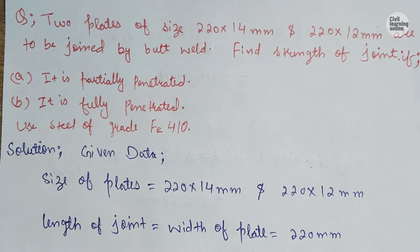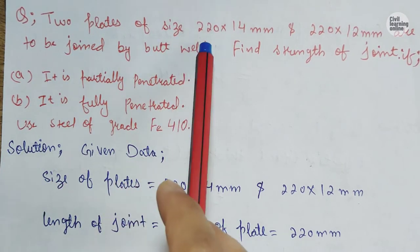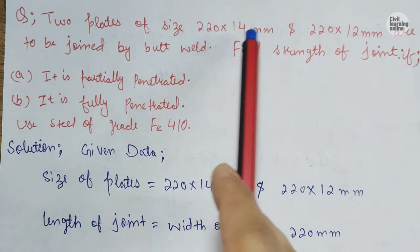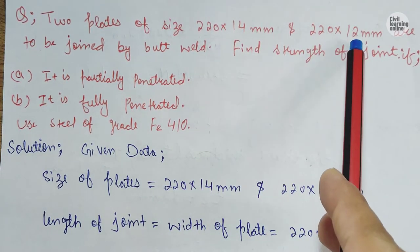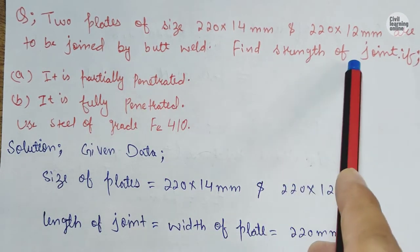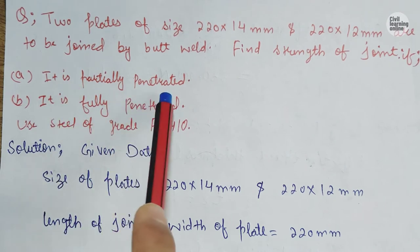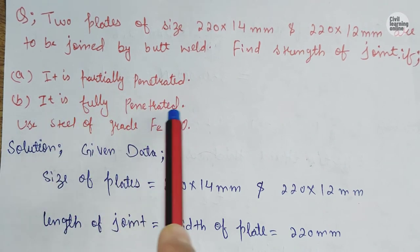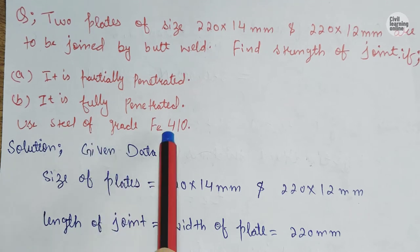We have a simple question about butt weld. We have two plates of size 220 mm × 14 mm and 220 mm × 12 mm, which are to be joined by butt weld. Find the strength of the joint if it is partially penetrated and if it is fully penetrated. Use steel grade FE 410.